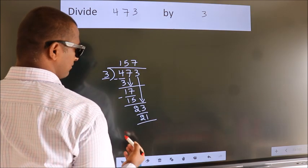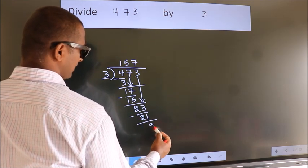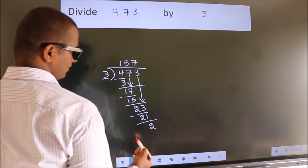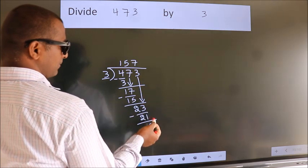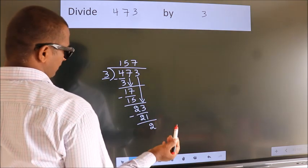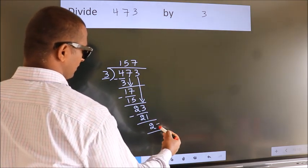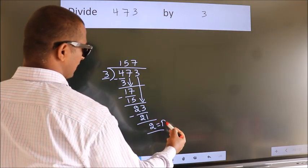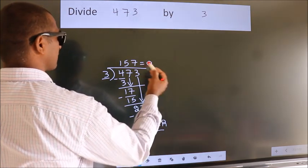...in the 3 table is 3 7s, which is 21. Now we subtract. We get 2. No more numbers to bring down, so we stop here. This is our remainder. This is our quotient.